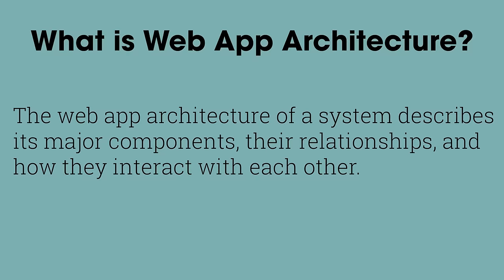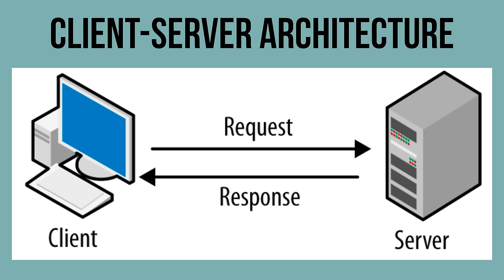So what is web app architecture? To put it simply, the web app architecture of a system describes its major components, their relationships, and how they interact with each other. It essentially serves as a blueprint — the layout of it all. And there are two main ways in which it's laid out, at least in the overarching, more broad idea of architecture, with the main one being client-server architecture. It would be irresponsible for me not to start with this, as it is the fundamental building block of the web.